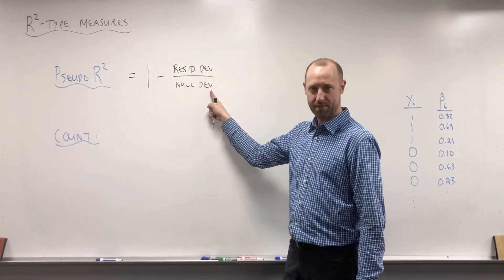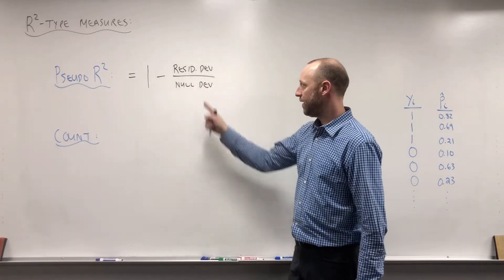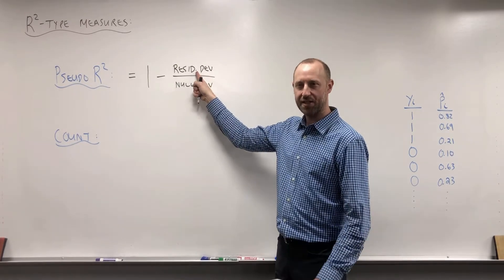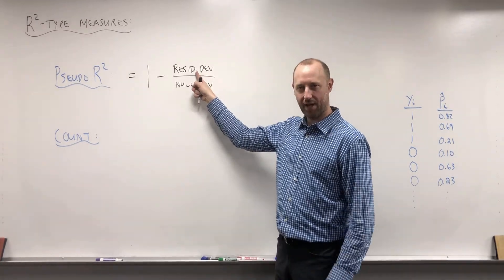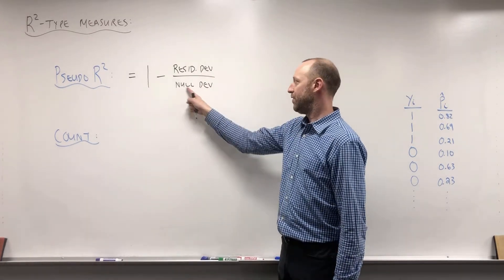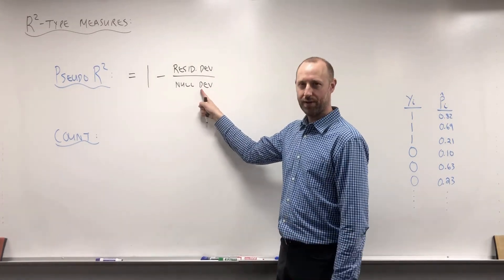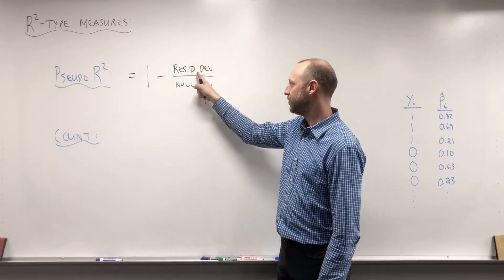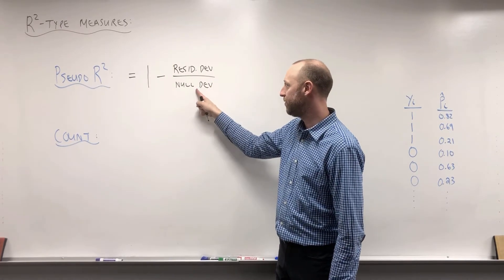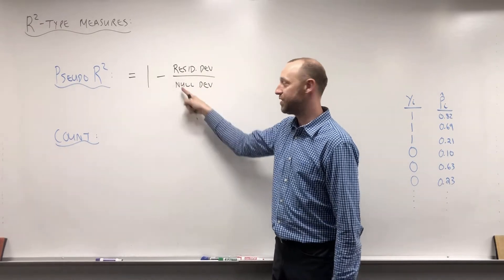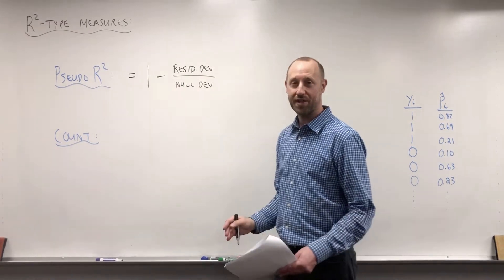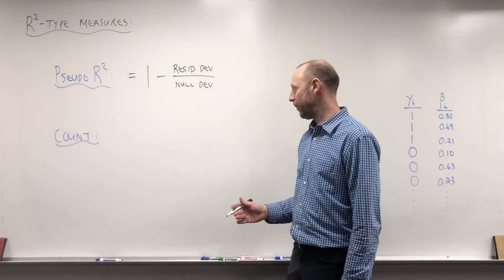...divided by the null deviance — so it's analogous to one minus the residual sum of squared errors over the sum of squared total. The residual deviance we can think of as the unexplained deviance — the error not explained by our model. The null deviance is the total error. So the residual deviance divided by null deviance gives us the percentage of deviance not explained by the model, and one minus that is the percent of deviance that is explained by the model.